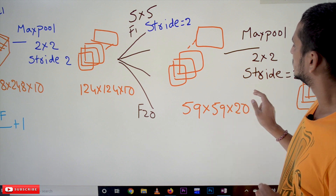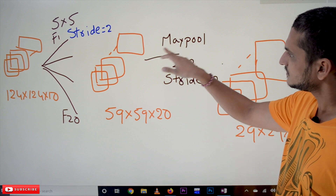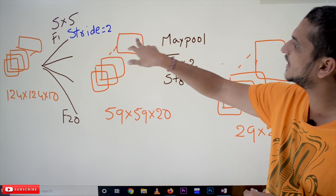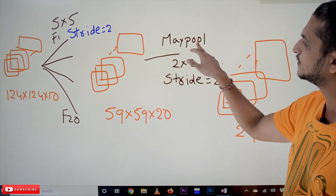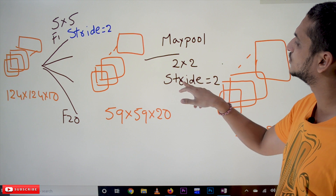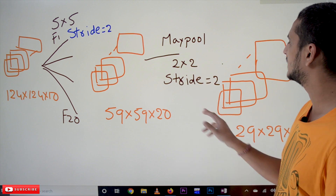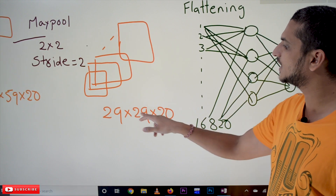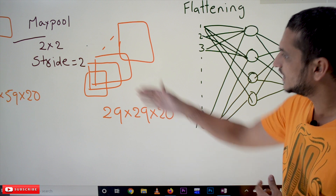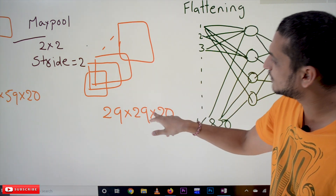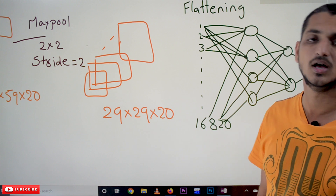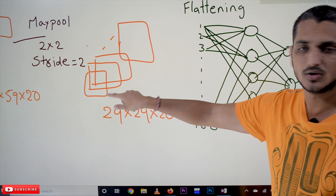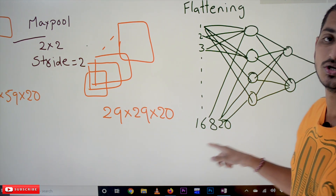Each output from this convolutional layer is taken as input to the max pool layer. We apply max pool of 2 by 2 with stride equal to 2, again reducing the image size to half. The output after the max pool layer is 29 by 29 by 20 — each channel has 29 by 29 pixels and we have 20 channels. The total number of pixels present in this entire image is 29 × 29 × 20 = 16,820 pixels.